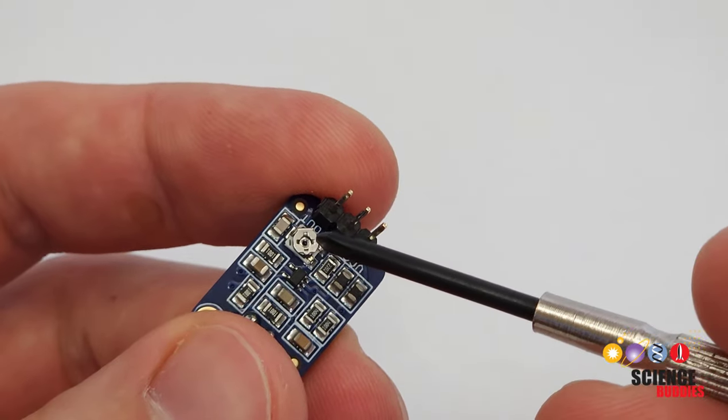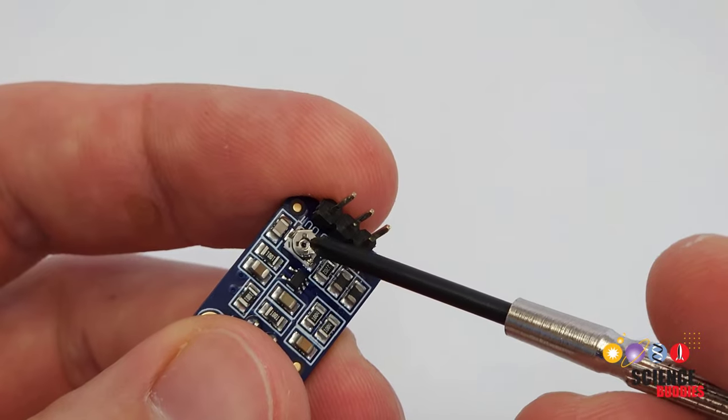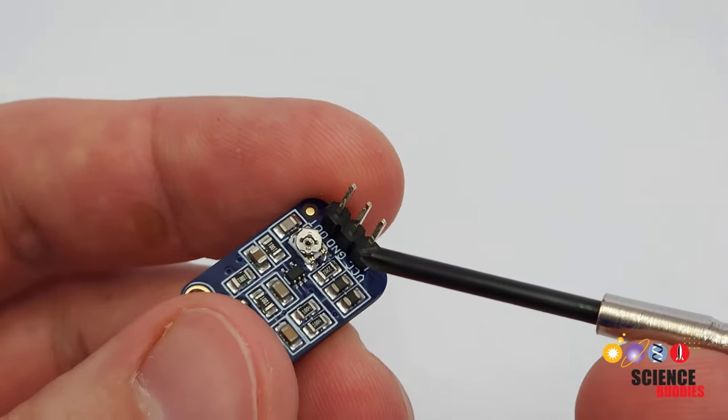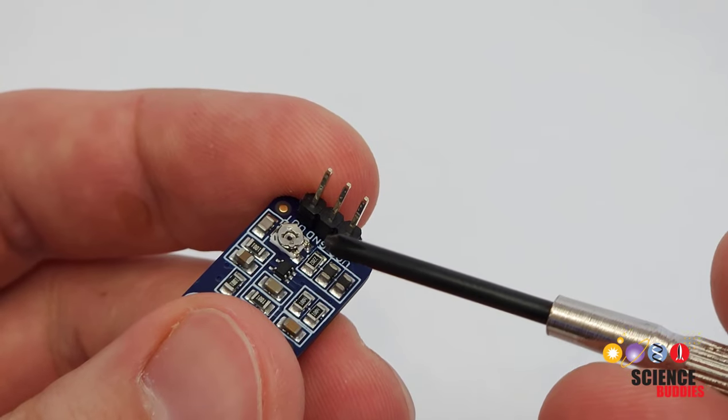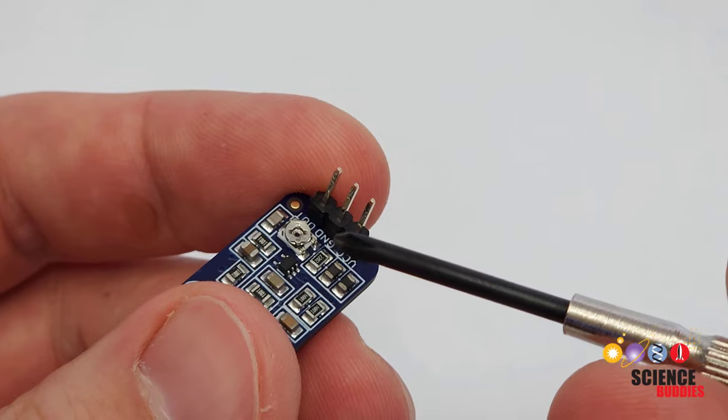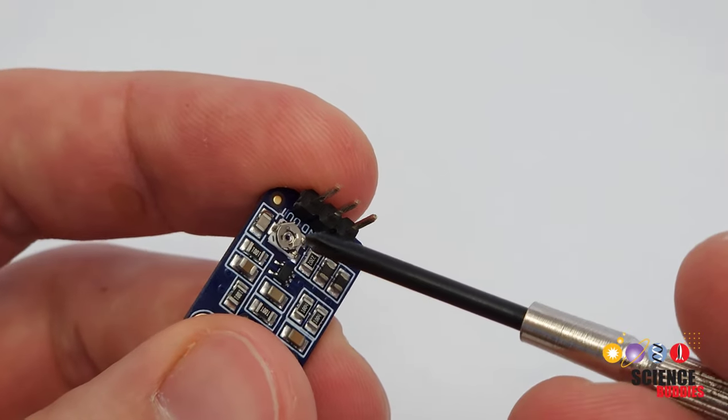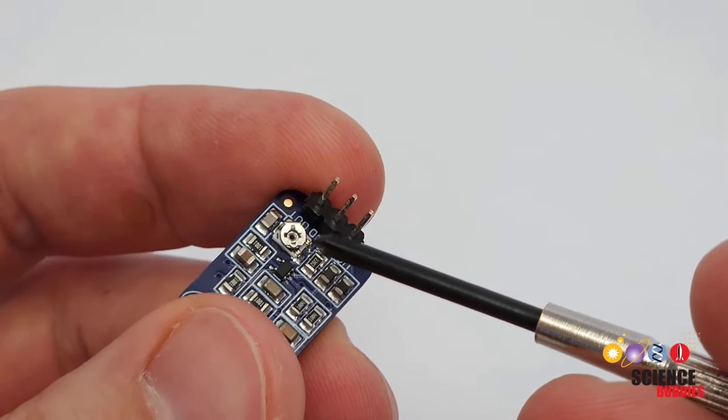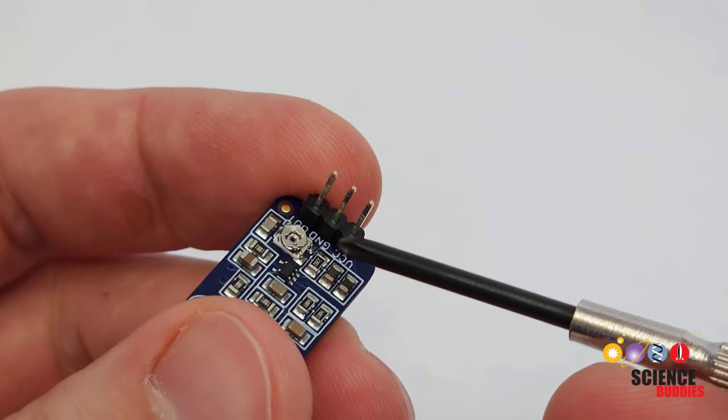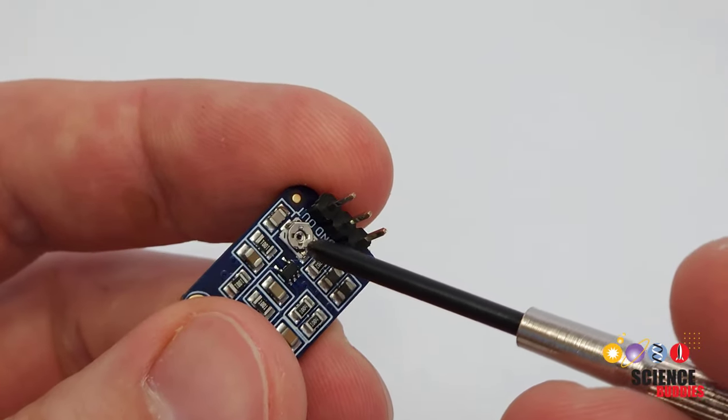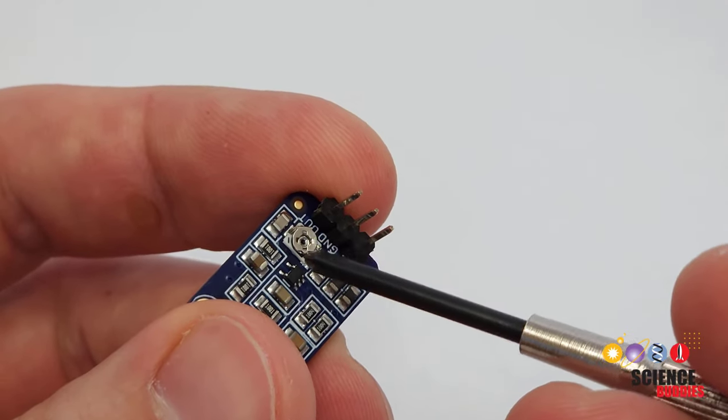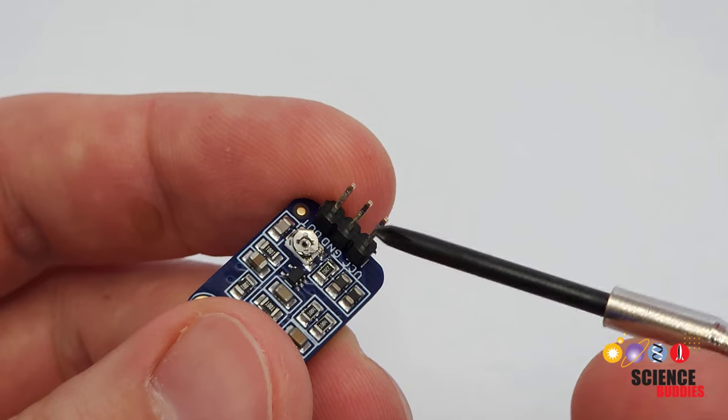Some microphones do come with an adjustable gain that will be in the form of a potentiometer that you can adjust on the board using a small screwdriver. This will change that amplification factor or how much change in voltage you get for a given amount of sound. So you might be tempted to just crank the gain all the way up, but you have to be careful because that means you will amplify everything, including any unwanted noise. So some microphones don't have an adjustable gain at all, but if yours does, you may need to play with this to find out what works best in your application.